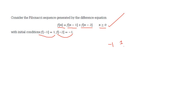Using these two initial conditions you can generate further values. For f(0): f(-1) + f(-2) = 1 + (-1) = 0. For f(1): f(0) + f(-1) = 0 + 1 = 1. Then continuing: 1, 1+0=1, 1+1=2, 2+1=3, 3+2=5, 5+3=8 — the well-known familiar Fibonacci sequence.